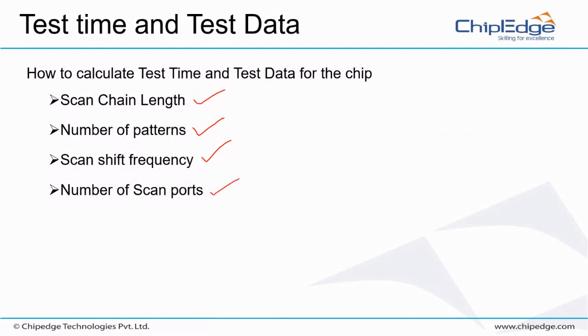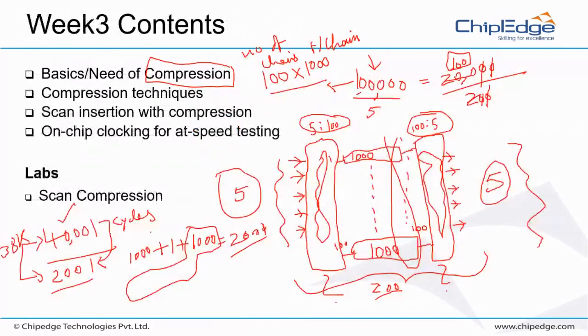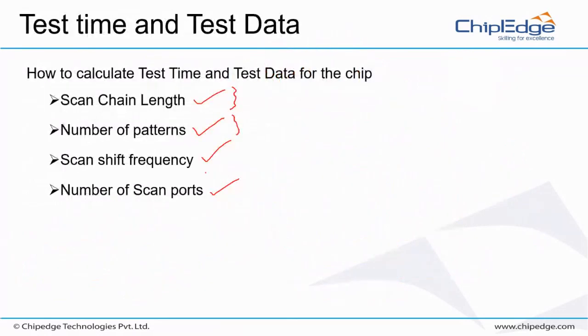Scan chain length defines the load and load cycles for one pattern. If you have N patterns, that's N times that many cycles. In our example, the length is 1000, so 2001 cycles for one pattern. If you have 100 patterns, that's 2001×100; for 1000 patterns, 2001×1000. You can optimize this with shift frequency.